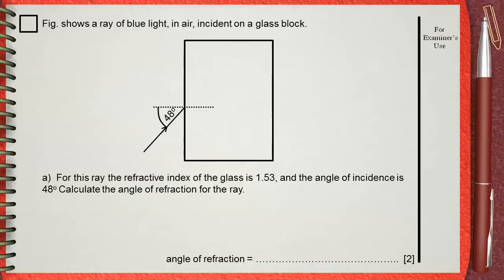Figure shows a ray of blue light in air incident on a glass block. For this ray, the refractive index of the glass is 1.53 and the angle of incidence is 48 degrees. Calculate the angle of refraction for the ray in the glass.